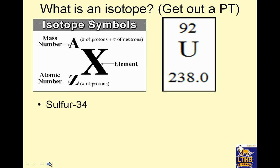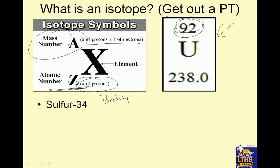What is an isotope? So you get out your periodic table, and your periodic table should look like it has elements like this. This is review. This is the mass number, A, which is protons plus neutrons. This is the atomic number, which is sometimes called Z, which is the number of protons, and that tells you the identity. So if you look for number 92, that's uranium. And then this is the average atomic mass — notice there was a decimal point. That average atomic mass is not what we use for this unit.